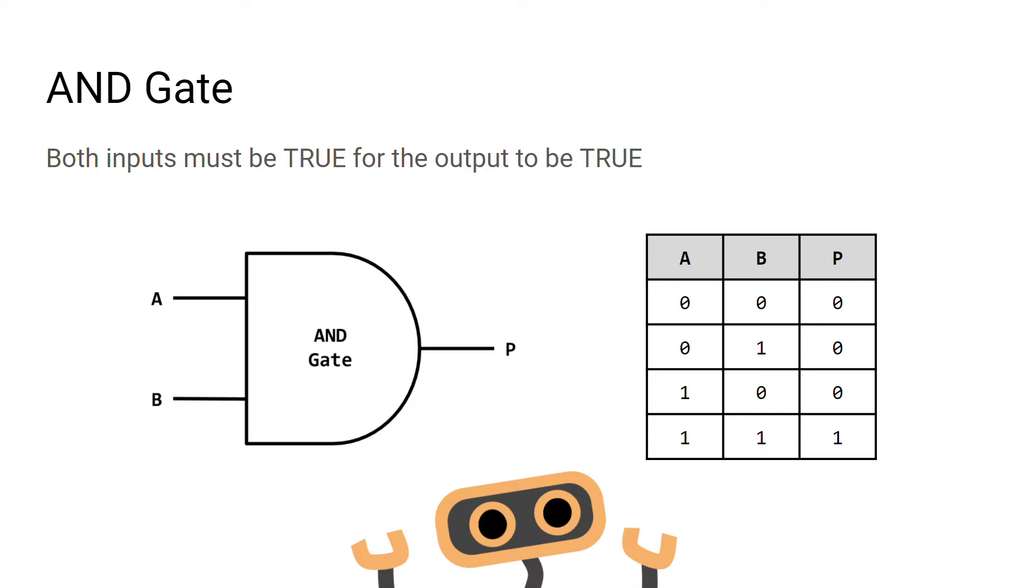Here is a diagram of an AND gate. It has two inputs and one output. An AND gate will only allow an electrical current to pass if it has two positive inputs going in.